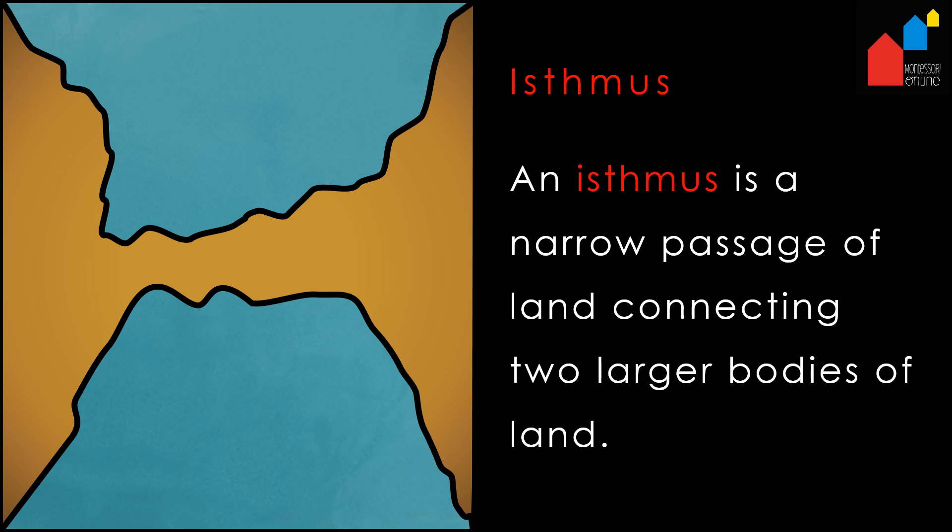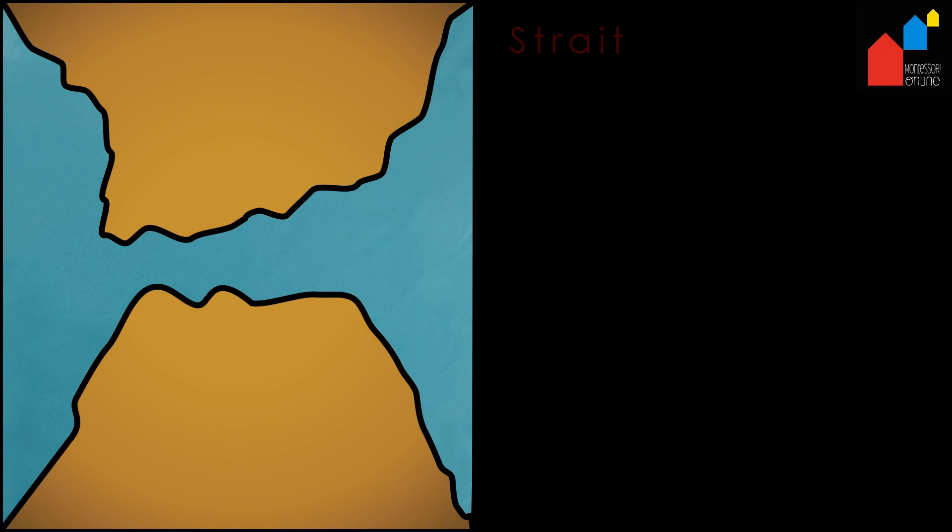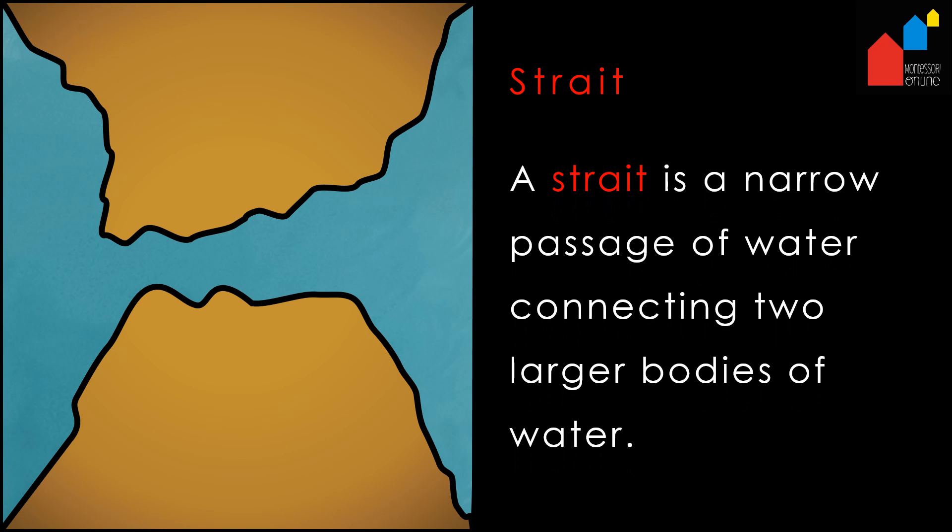An isthmus is a narrow passage of land connecting two larger bodies of land. A strait is a narrow passage of water connecting two larger bodies of water.